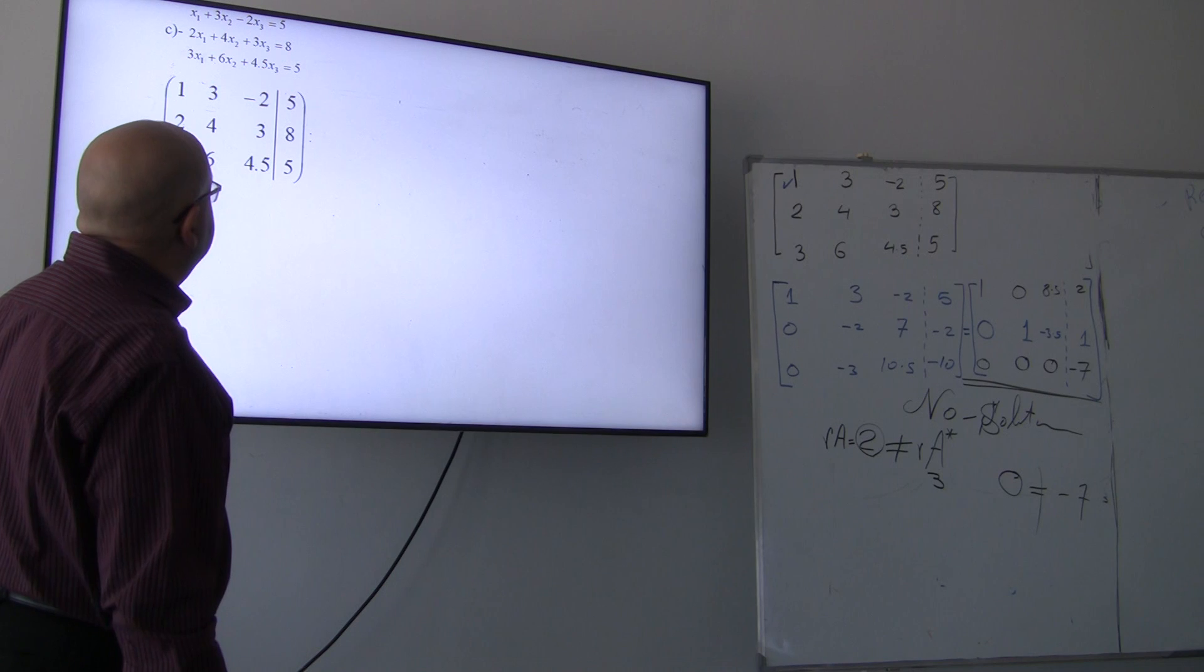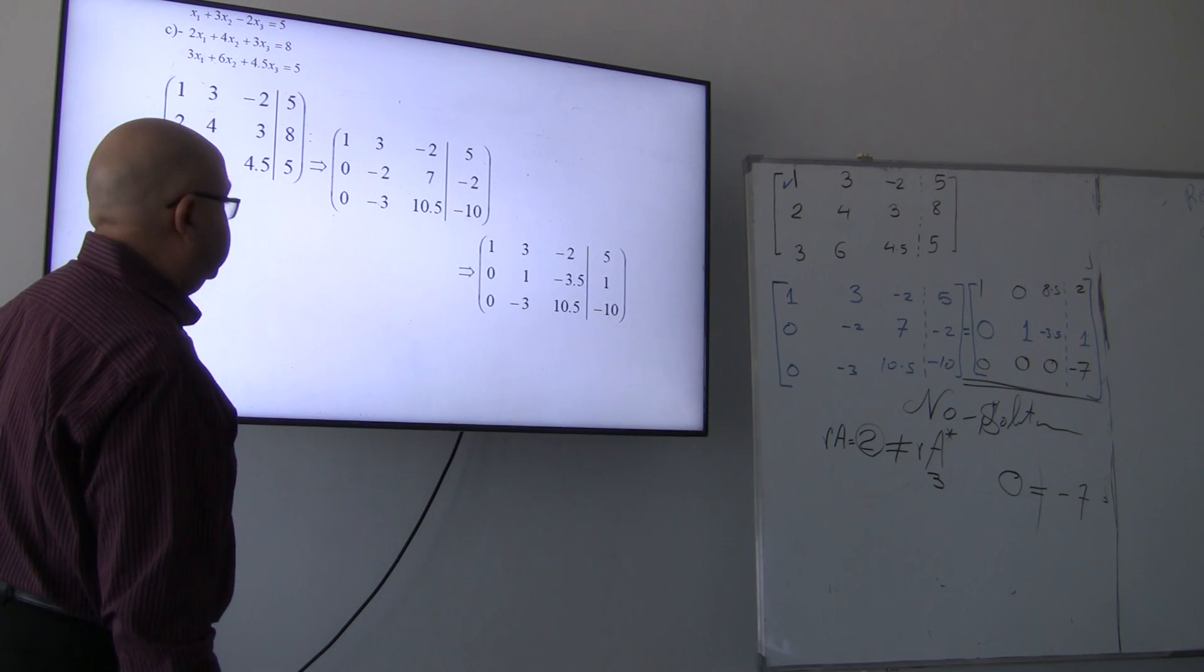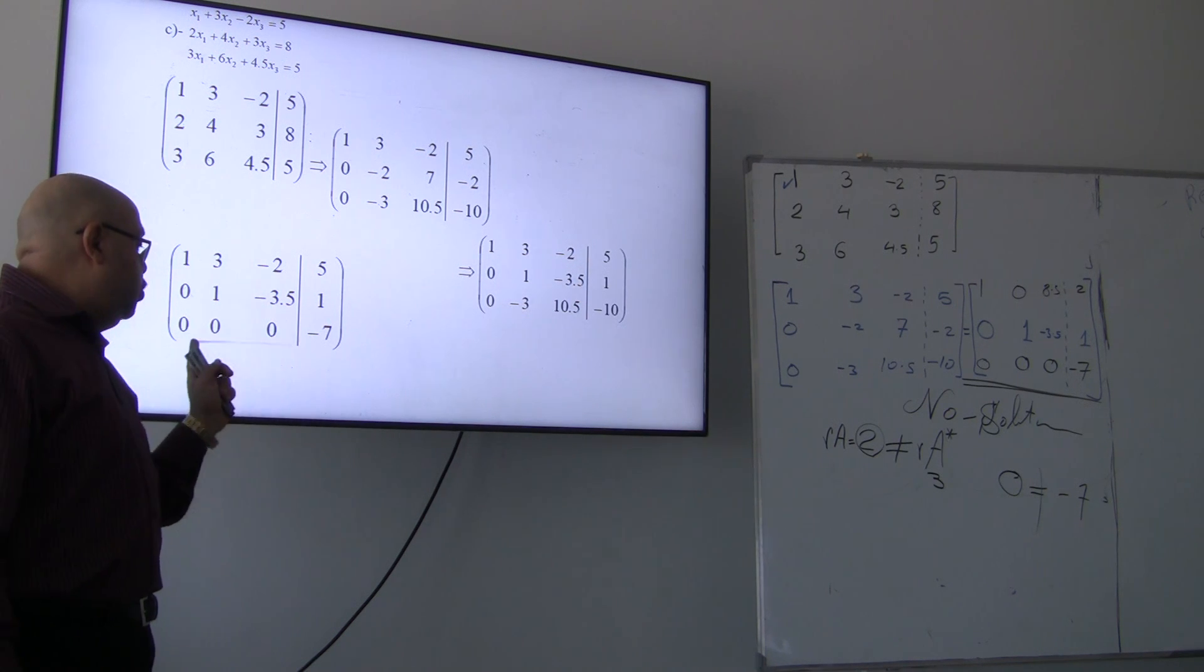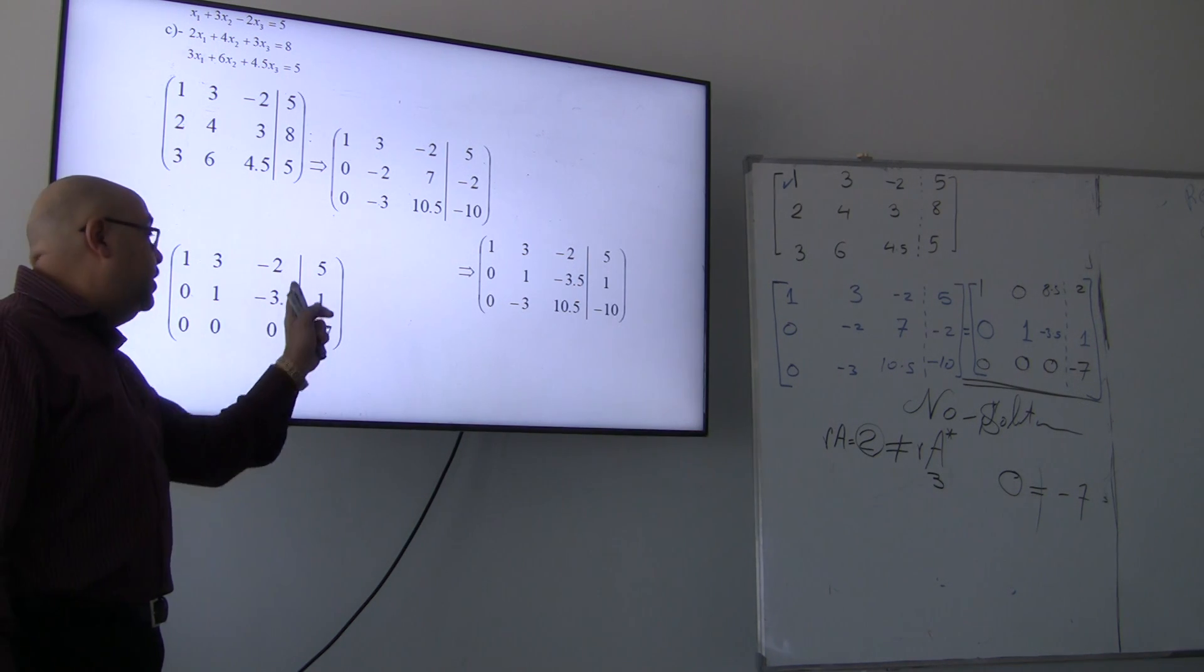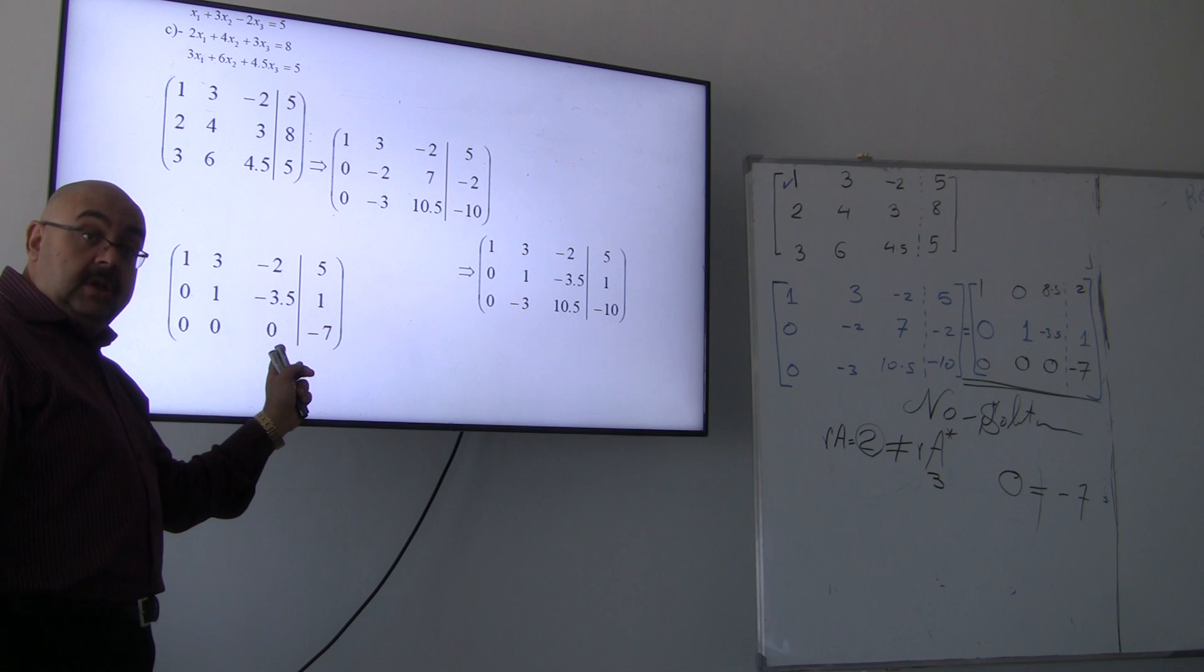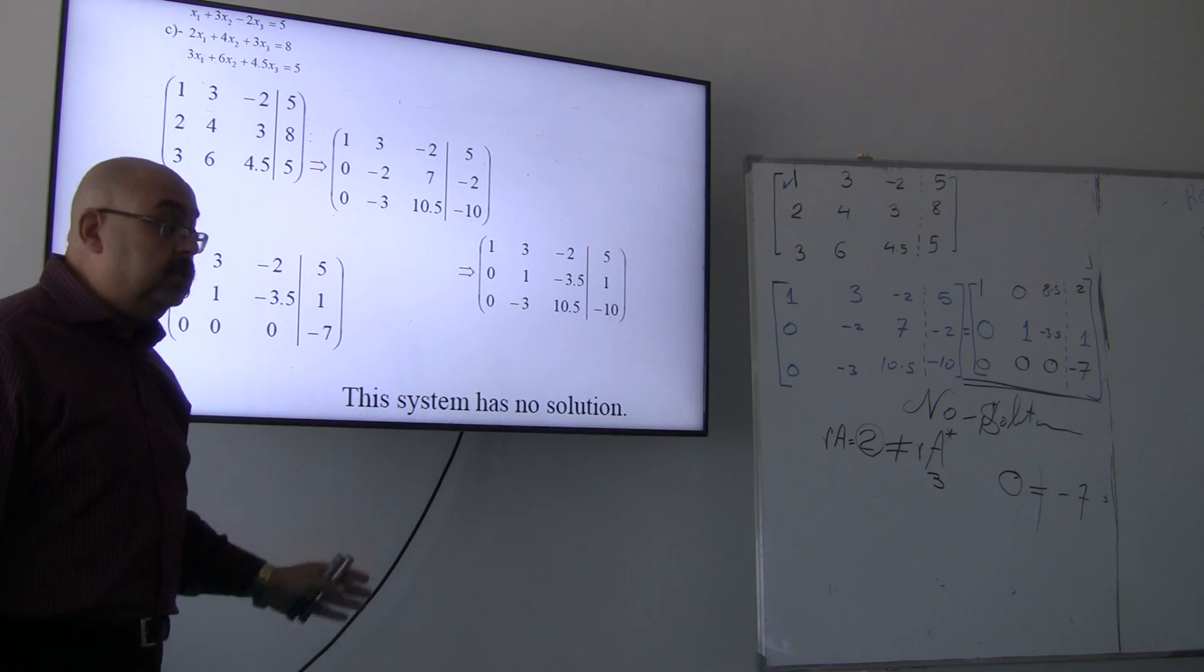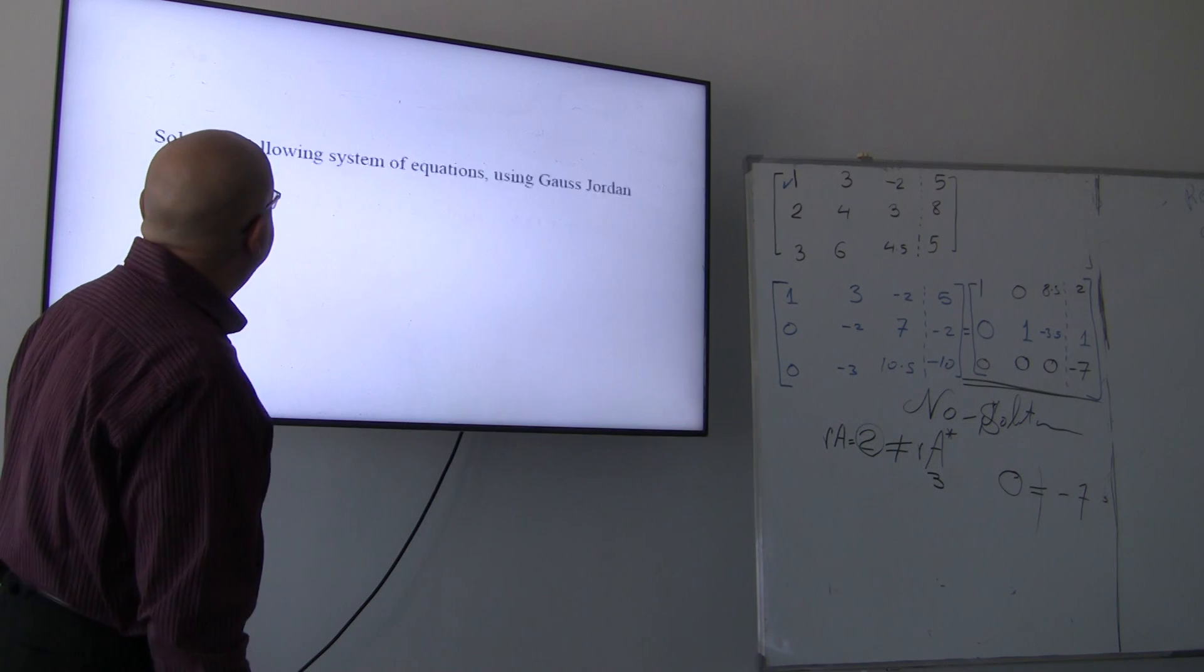This is the last system. Similar steps. See? This row is 0s after the equality, and the result is not equal to 0, which means we have no solution for the system of equations.